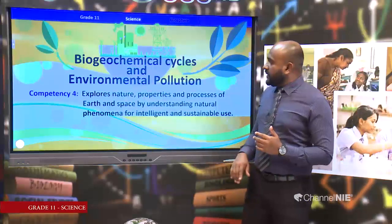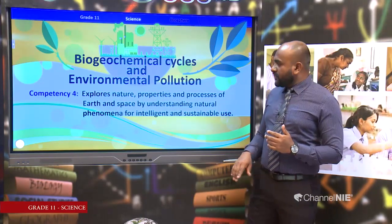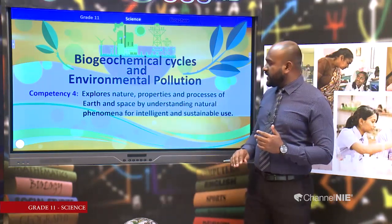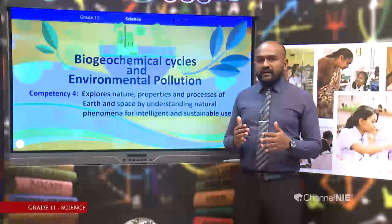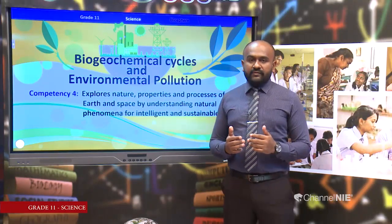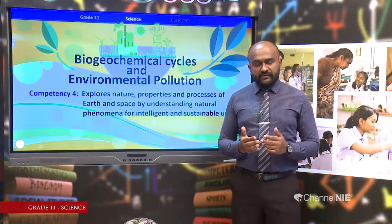In today's lesson we are going to talk about biogeochemical cycles, and later we are going to talk about environmental pollutants. This part also comes under Competency 4. Under Competency 4, you are supposed to explore the nature, properties and processes of earth and space by understanding natural phenomena for intelligent and sustainable use — that is the purpose of this unit 15.